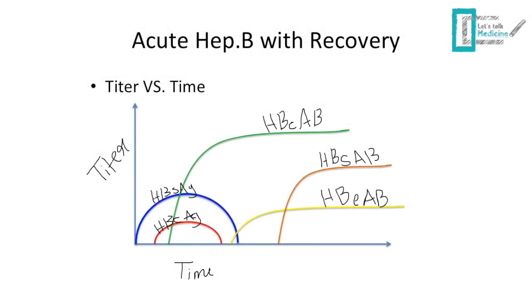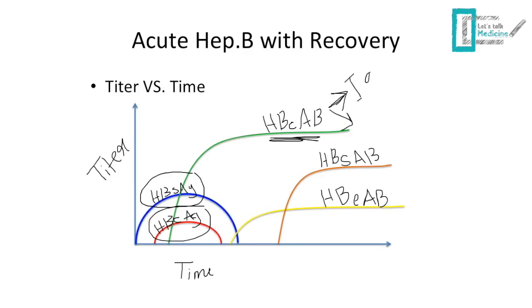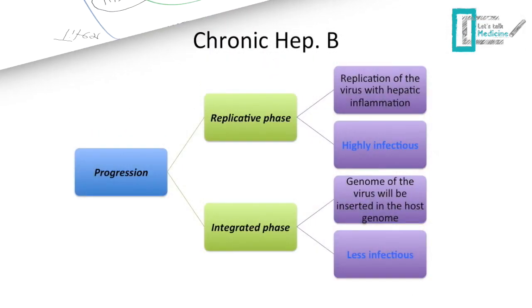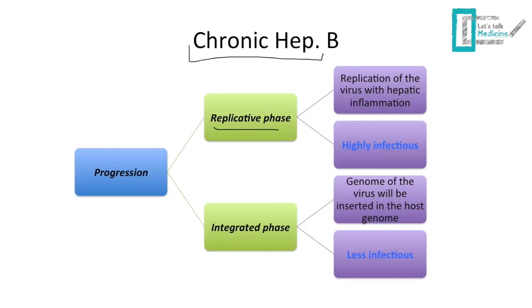Here we have a chart showing titer versus time — the amount of antigen and antibody in the blood. When the patient is first infected, the first marker to appear is hepatitis B surface antigen, followed by the core antigen. The first defense mechanism is the anti-hepatitis B core antibody. Depending on whether the infection is acute or chronic, we will have IgM for acute and IgG for chronic infection. Later, hepatitis B E antibody and hepatitis B surface antibody will also appear.